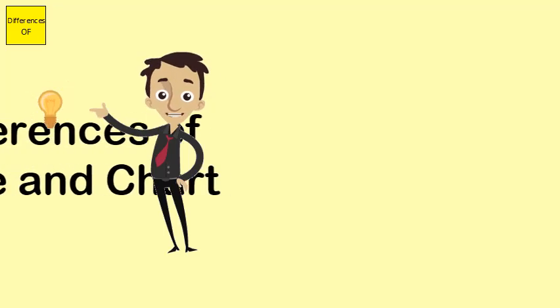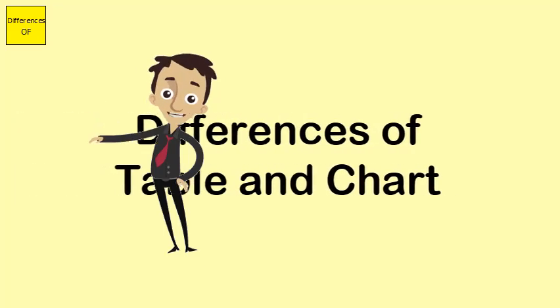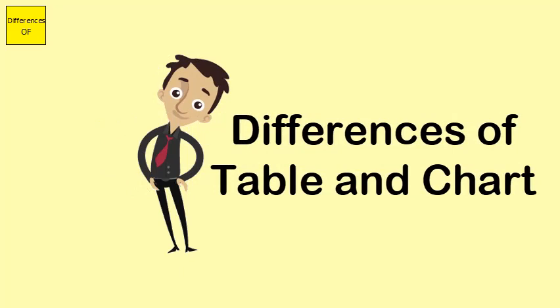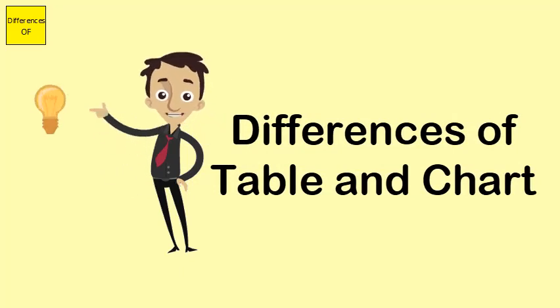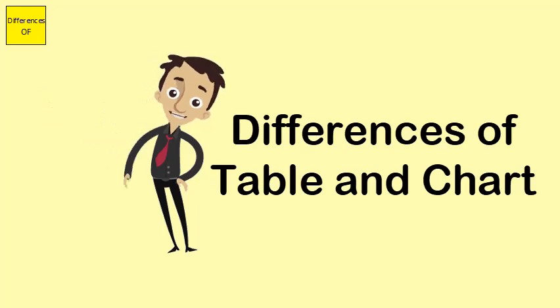Difference between Table and Chart. Table is a means of displaying data or information in rows and columns. Chart is a graphical display of information.